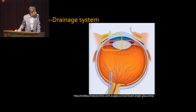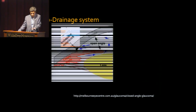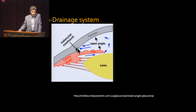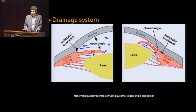The drainage system is located in the front part of the eye, at the area where the collar part and the cornea meet — this is called the trabecular meshwork. If the trabecular meshwork is not covered by the iris, this is called open angle. But if the collar part is covering the drain, this is called closed angle. These are two major subtypes of glaucoma: open angle and closed angle.